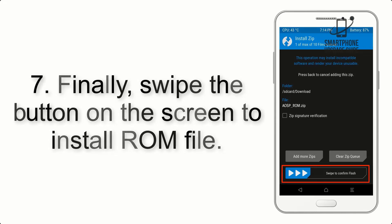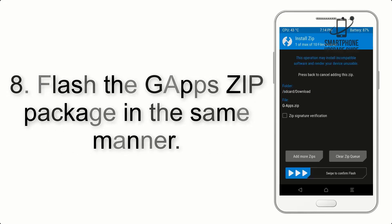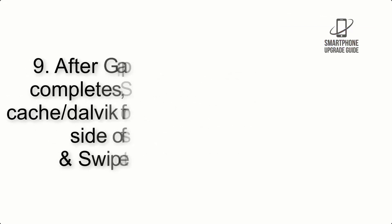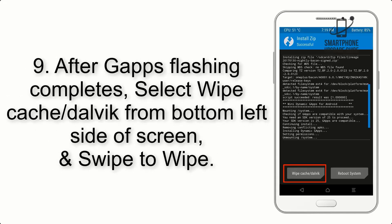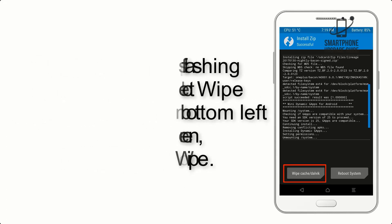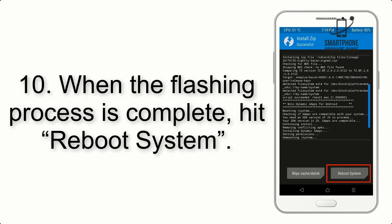Step 7: Swipe the button on the screen to install the ROM file. Step 8: Flash the GApps zip package in the same manner. Step 9: After GApps flashing completes, select Wipe Cache and Dalvik from the bottom left side of the screen and swipe to wipe.